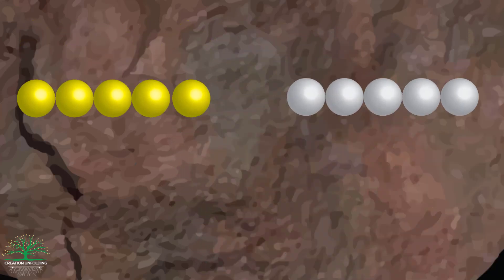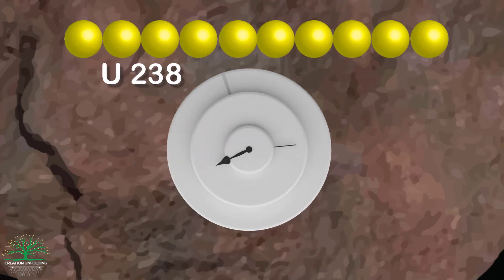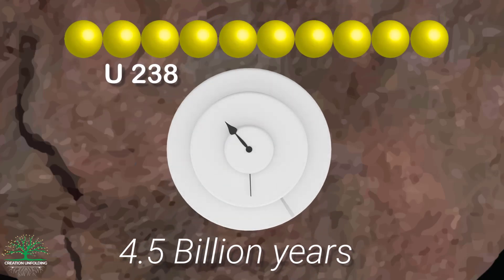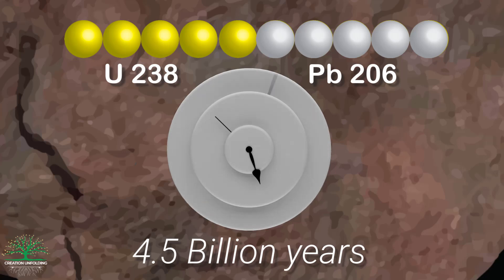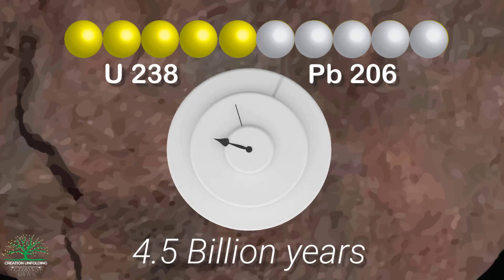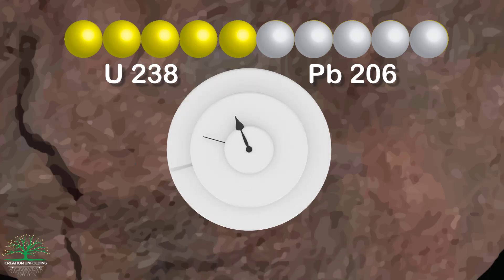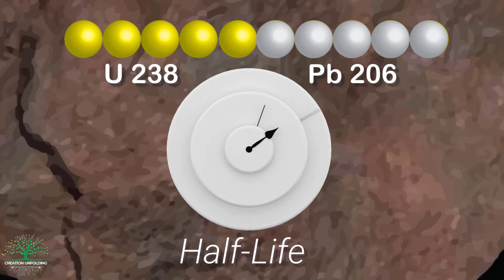As it turns out, the rate at which uranium-238 decays away into lead-206 is measurable, but more importantly, it is a constant. So if we started out with 10 atoms of uranium-238, scientists tell us that it would take about 4.5 billion years for half of those 10 atoms to turn into lead-206. Since our rock has five uranium atoms and five lead atoms, most scientists would conclude that it took 4.5 billion years for this to happen. This is called the half-life of uranium-238.